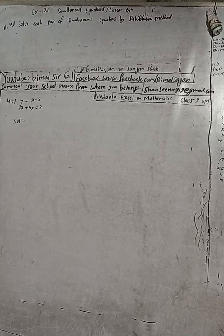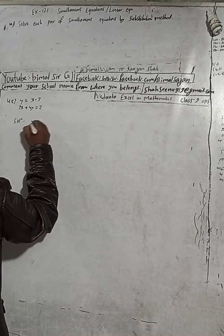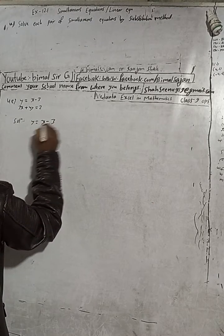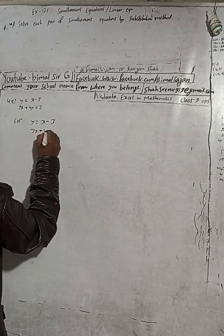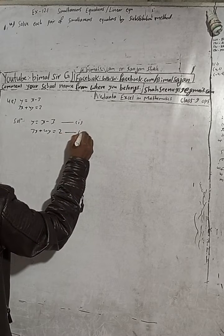Equation 4E. Solve this by substitution method. Y is equal to x minus 3 and 3x plus 4y is equal to 2. This is equation 1 and this is equation 2.